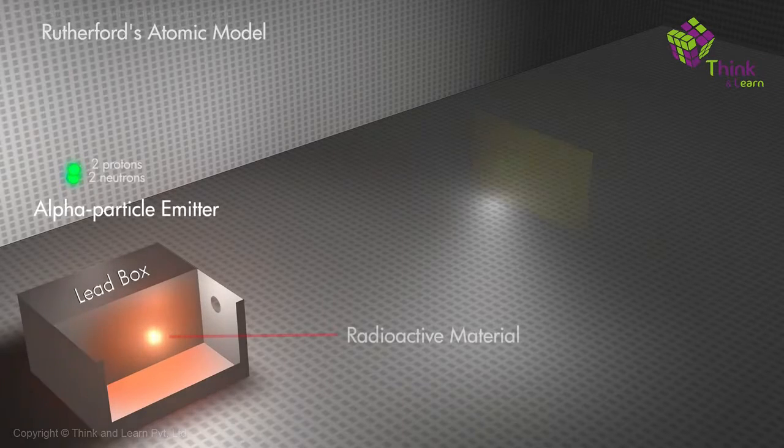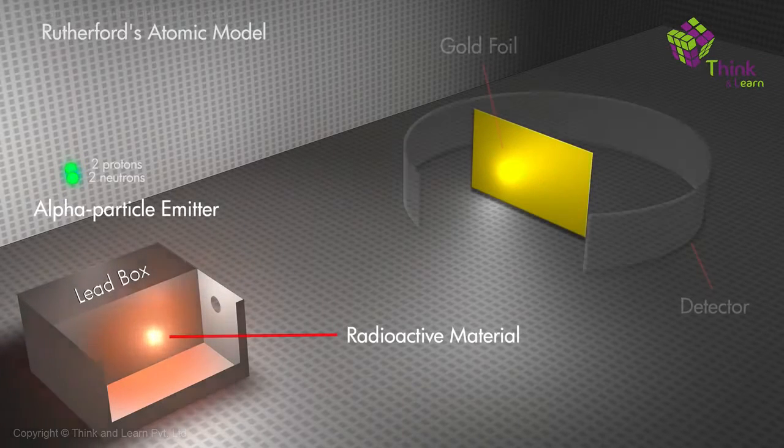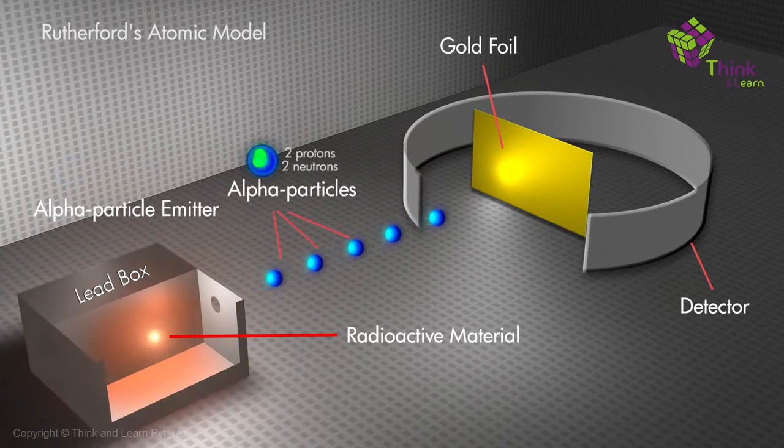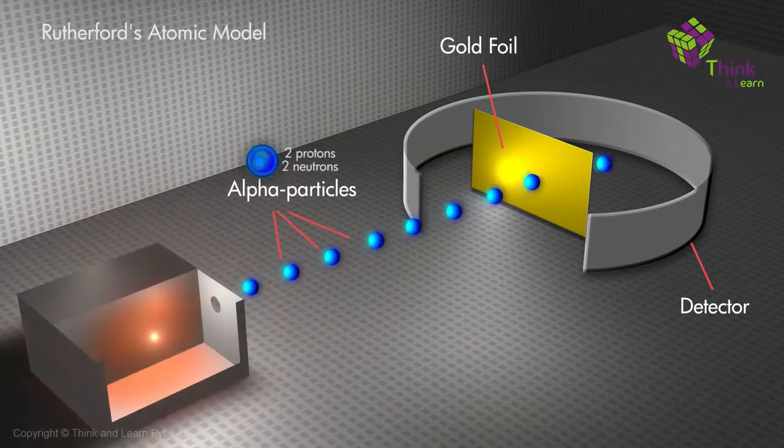He did an amazing experiment called the gold foil experiment. What he did in that experiment was: you have the gold foil in the center, and he had alpha particles being bombarded on the gold foil, and you have a detector which was detecting whether those alpha particles were passing through the gold foil or not.